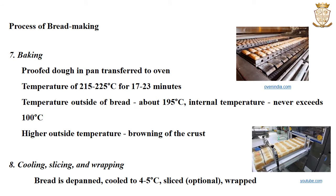The next stage is baking. The proofed dough in the pan is transferred to the oven where it is subjected to a high temperature, generally greater than 200 degrees Celsius, approximately 215 to 235 degrees Celsius. The time duration varies from 17 to 23 minutes or 45 to 60 minutes. As baking progresses, the temperature increases, gas production rises and various events occur. Baking is the final stage that determines the success of bread making. The temperature on the outside of the bread will be above 195 degrees Celsius while the internal temperature never exceeds 100 degrees Celsius, and the higher outside temperature results in the browning of the crust.